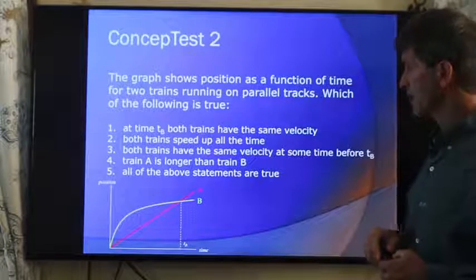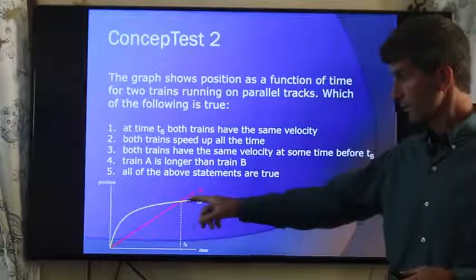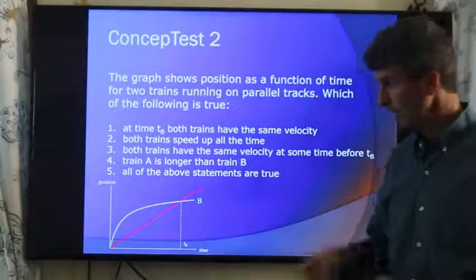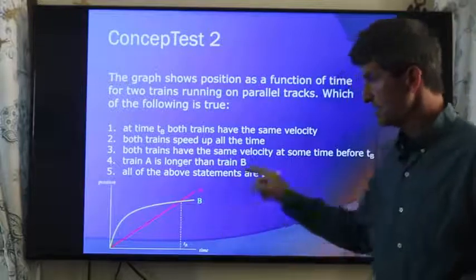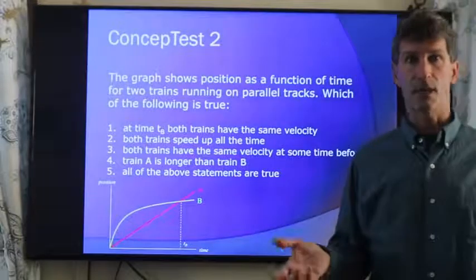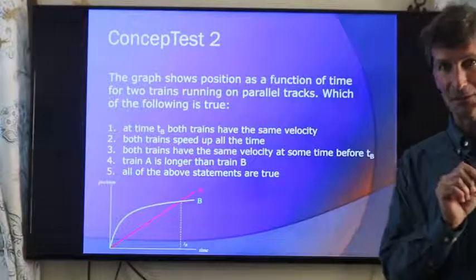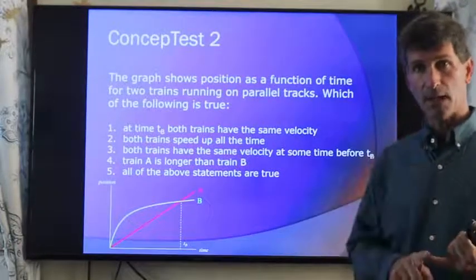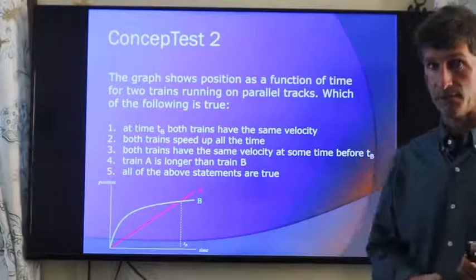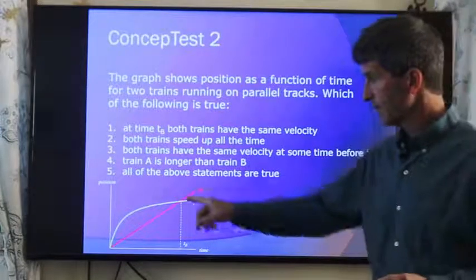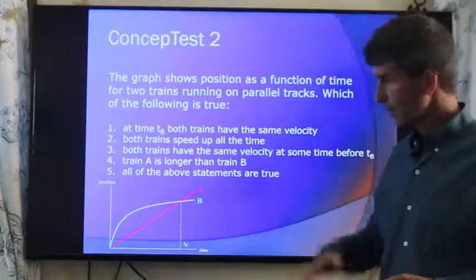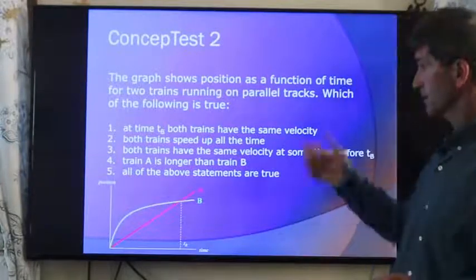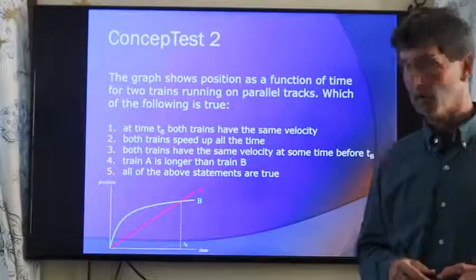At time TB, both trains have the same velocity. Is that true? No. At time TB, if we take a tangent line to those two, A's tangent line is constant, so it's instantaneous velocity is also its average velocity at any two points. We can clearly see what that slope is. But B, a tangent line would have less of a slope, so we can't say the trains will have the same velocity.